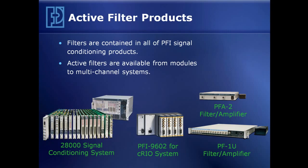On the right, we have the PFA-2 — a two-channel lab filter, very high-performance, DC-powered, for when you only need a couple of channels. That is about a half rack in width and about eight inches in depth. Below that is the PF-1U, a 16-channel filter, also rack-mountable, 1U — one and three-quarter inches high. This gives you an idea of what different implementations of a programmable active filter system would look like.